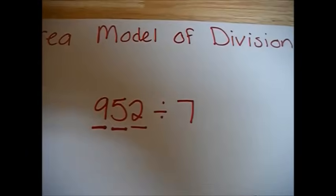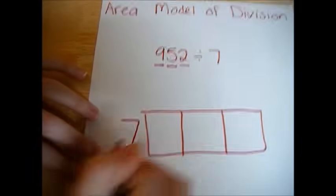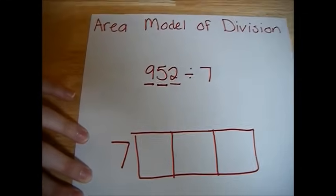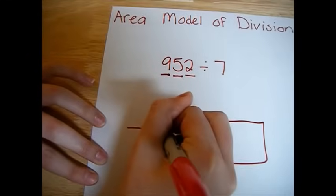Now, since we're dividing by 7, we will place the 7 next to the box and place the 952 inside of the first box.